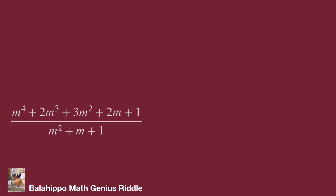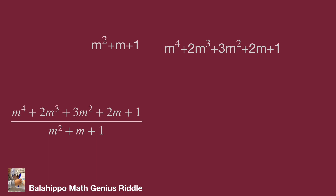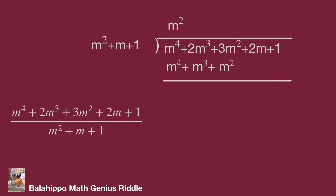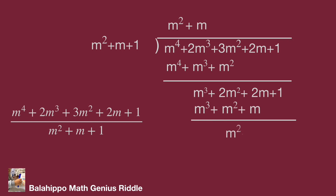In this fraction, we perform polynomial long division: dividing m to the power 4 plus 2m cubed plus 3m squared plus 2m plus 1 by m squared plus m plus 1. The quotient starts with m squared; the remainder is m cubed plus 2m squared plus 2m plus 1. Adding m to the quotient, the remainder becomes m squared plus m plus 1. Then adding 1 to the quotient, the remainder is 0.